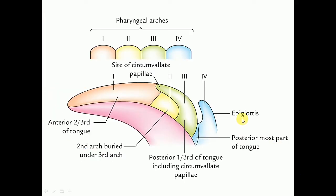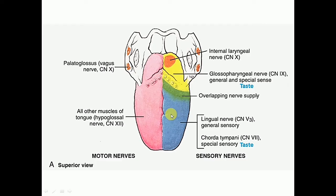Correlating the development of the tongue with its nerve supply: the anterior two-thirds of the tongue is derived from the first or mandibular arch. The lingual nerve, a branch of the mandibular nerve, carries general sensation — the mandibular nerve being the post-trematic nerve of the first arch. Taste sensation from the anterior two-thirds is carried by the chorda tympani nerve, which is the pre-trematic nerve of the first arch.